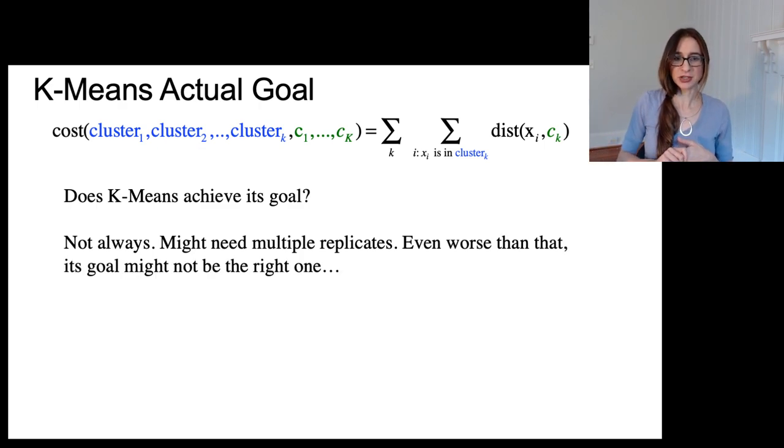But there's a problem that's actually worse than just the fact that it doesn't converge to a globally optimal solution. In some cases, the objective here might actually be completely the wrong objective. And I'm going to show you an example where this objective is just plain wrong. So no matter where you set up the initial cluster centers, you're going to get garbage.